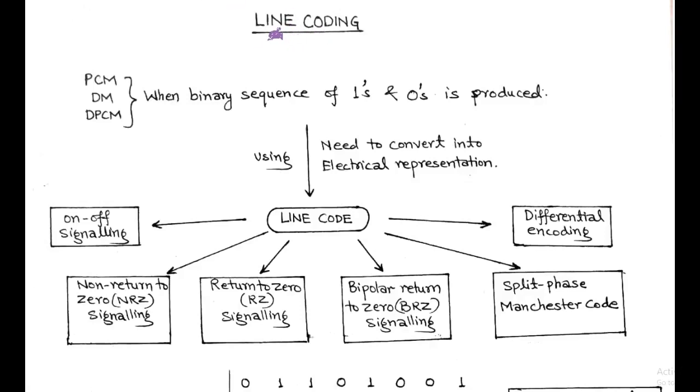In this session, we are going to discuss line coding. In digital techniques such as PCM, DM, and differential PCM, binary sequence in form of 1s and 0s is produced at the transmitter side. There is a requirement to convert this binary sequence data into electrical representation which is easy to understand and convey information.